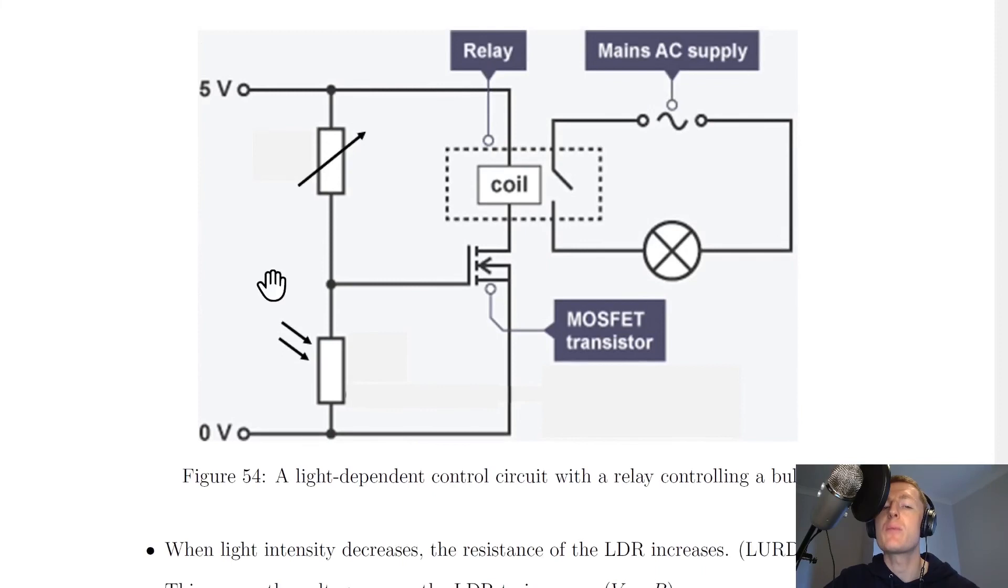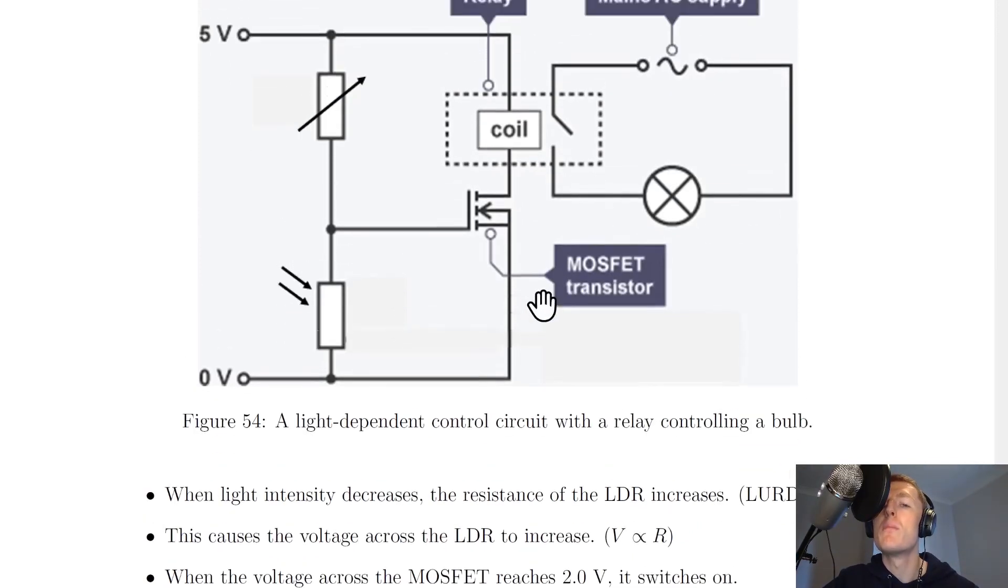And that's because V is proportional to R, remember. So as resistance goes up, then voltage goes up. So we're saying the voltage across here goes up, which means that the voltage across the MOSFET must go up as well.